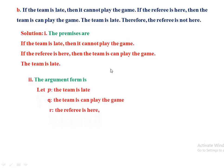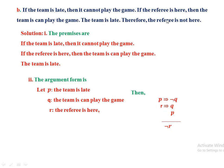Let P = 'the team is led,' Q = 'the team can play the game,' R = 'the referee is here.' The symbolic argument form is: P implies negation Q, R implies Q, P as premises, with conclusion negation R. This is because if the team is led it cannot play (P implies negation Q), if the referee is here the team can play (R implies Q), and the team is led (P), so the referee is not here (negation R).